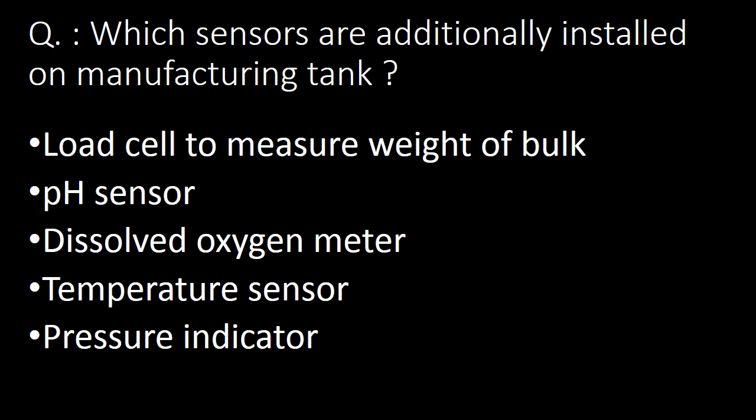Next question: which sensors are additionally installed on manufacturing tanks? Based on the design, sensors can be inbuilt or additionally installed. These include a load cell to measure weight of manufactured bulk, a pH sensor, a dissolved oxygen meter, a temperature sensor, and a pressure indicator.